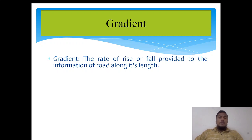Let us move towards gradient. The definition of gradient is very simple — it is nothing but the rate of rise or fall of a road along its length. Simply put, the rate of rise or fall provided to the formation of a road along its length is called gradient, and it is necessary to level the road or highway for smooth functioning.